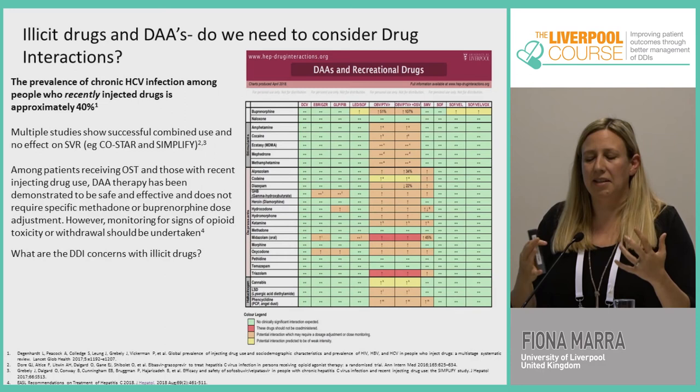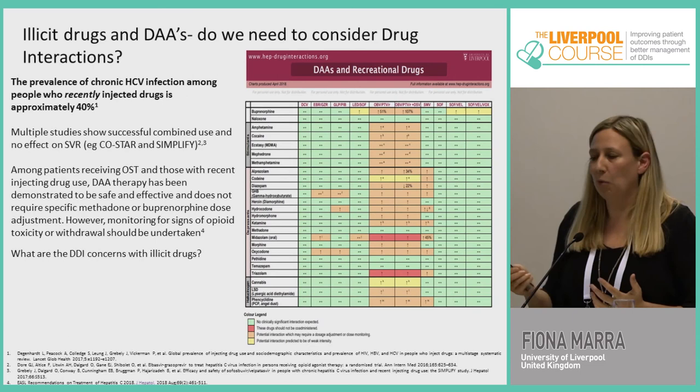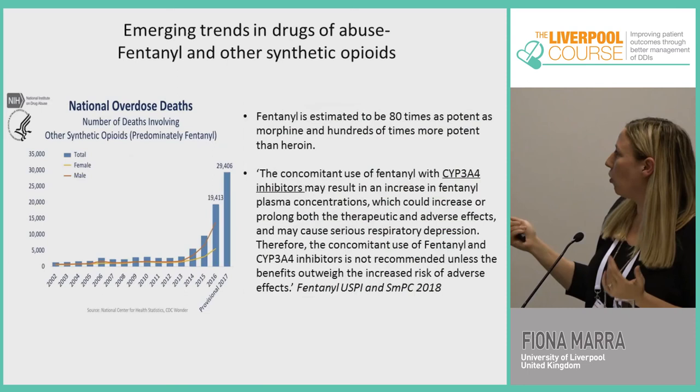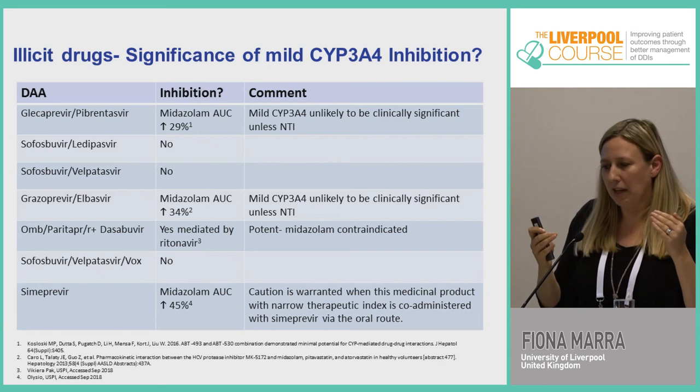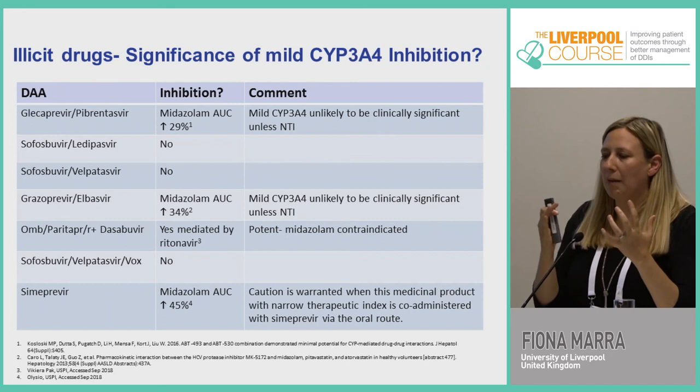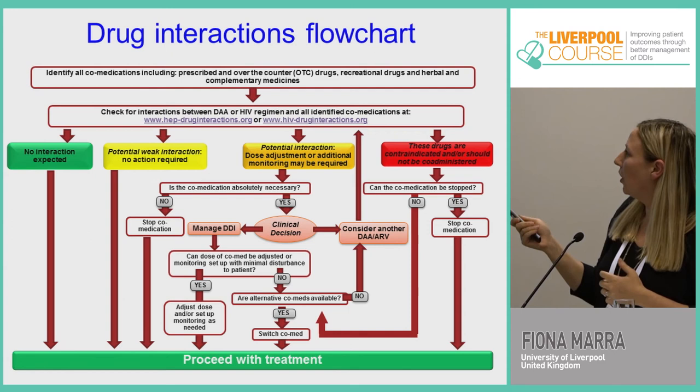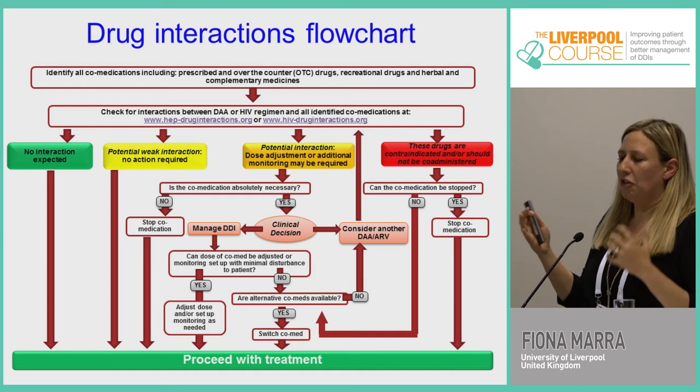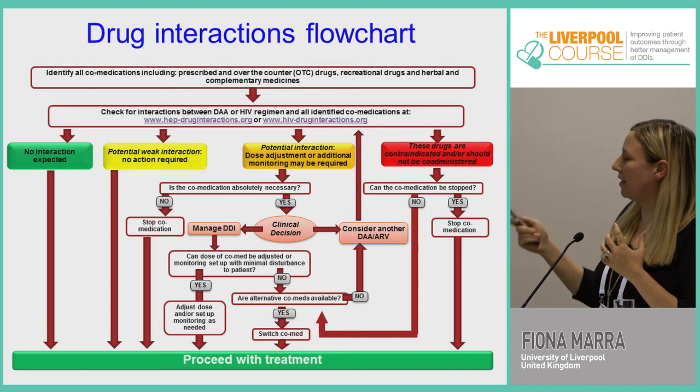Illicit drugs also need to be considered in Hepatitis C treatment. The majority of patients shouldn't stop treatment, but some 3A4 inhibitor drugs such as fentanyl or amphetamines may require tailoring of treatment. A decision-making flowchart has been prepared — it will be available on the slides — covering the management process for interactions, largely focused around managing amber interactions.